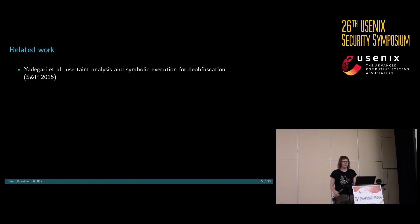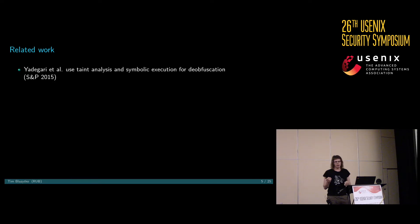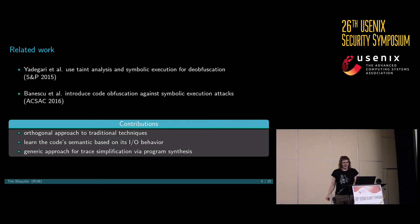Yadigari et al. introduced the state of the art for automated deobfuscation. They work on instruction traces — basically a large instruction trace — and perform a mixture of taint analysis on the one hand, and symbolic execution on the other hand. Then they get simplified formulas that are nearly equivalent to the native code. However, Banescu et al. introduced some new code obfuscation techniques that break symbolic execution deobfuscation attacks. They analyze code itself and rely on the code semantics and the code's complexity.